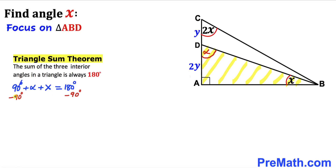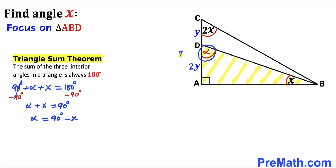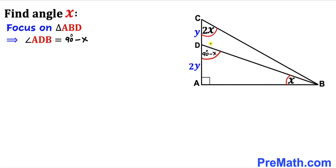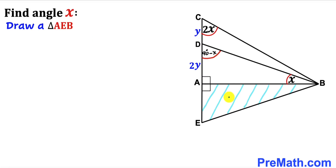Subtracting 90 degrees from both sides gives us alpha plus X equals 90 degrees. Moving X to the right-hand side, angle alpha turns out to be 90 degrees minus X. So angle ADB is 90 degrees minus X.